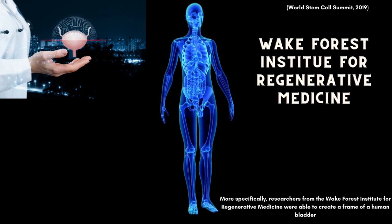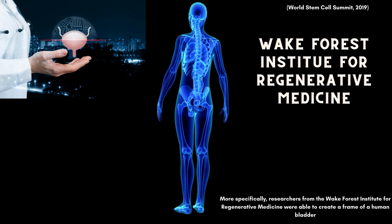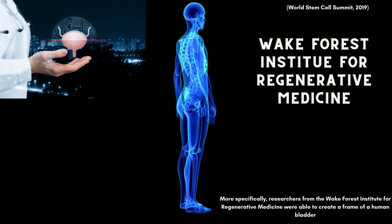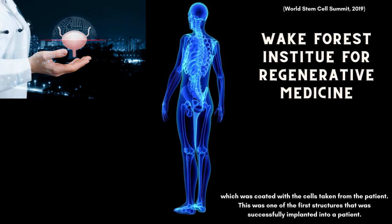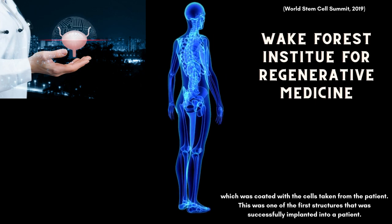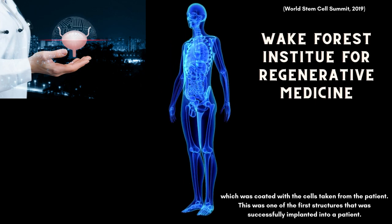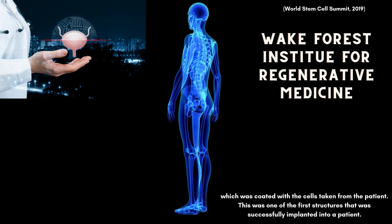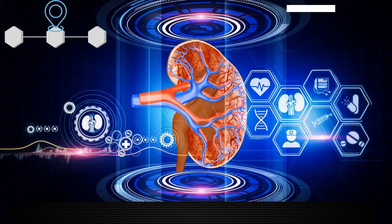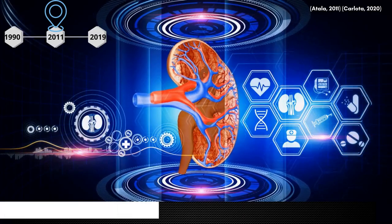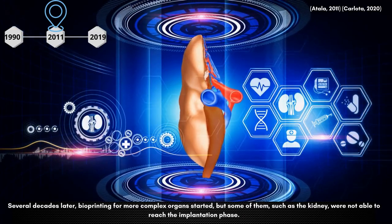More specifically, researchers from the Wake Forest Institute for Regenerative Medicine were able to bioprint a bladder for the first time, using stem cells to create a frame of a human bladder which was coated with cells taken from the patient. This was one of the first structures that was successfully implanted into a patient. Several decades later, bioprinting for more complex organs started, but some of them, such as the kidney, were not able to reach the implantation phase.